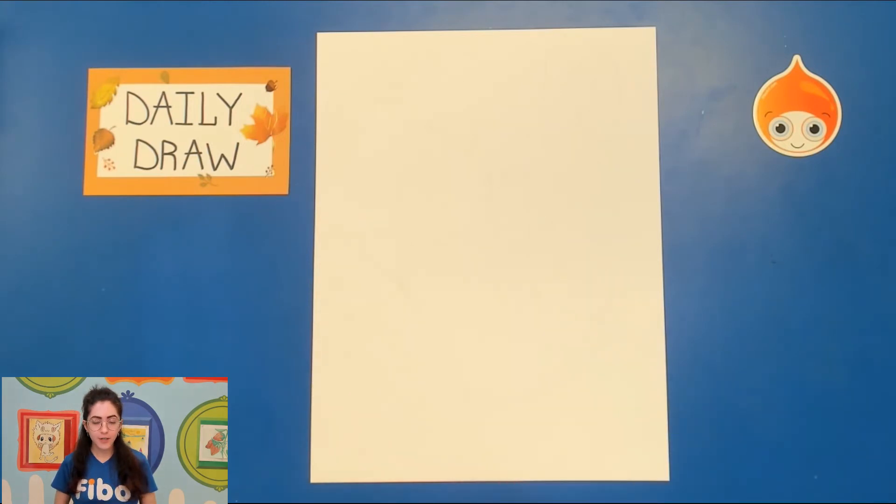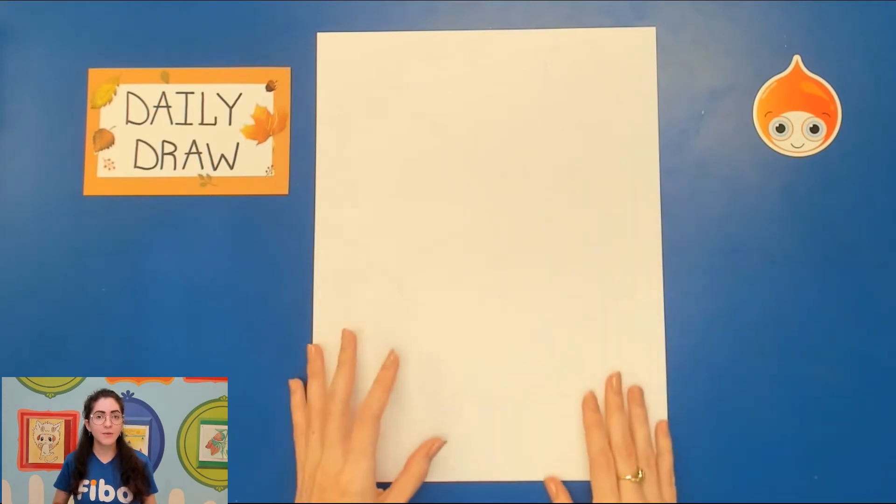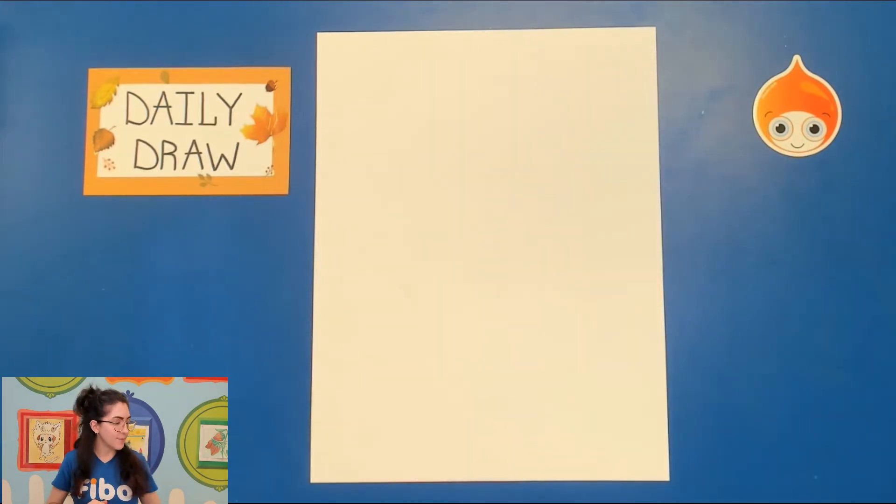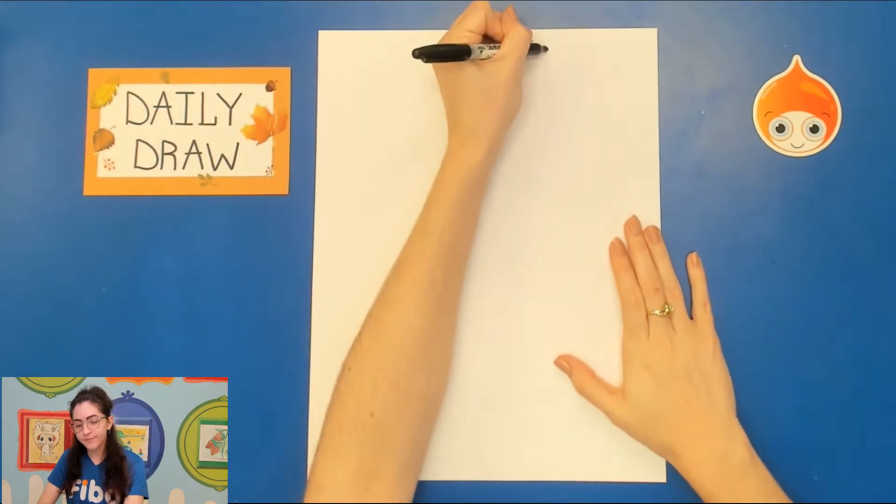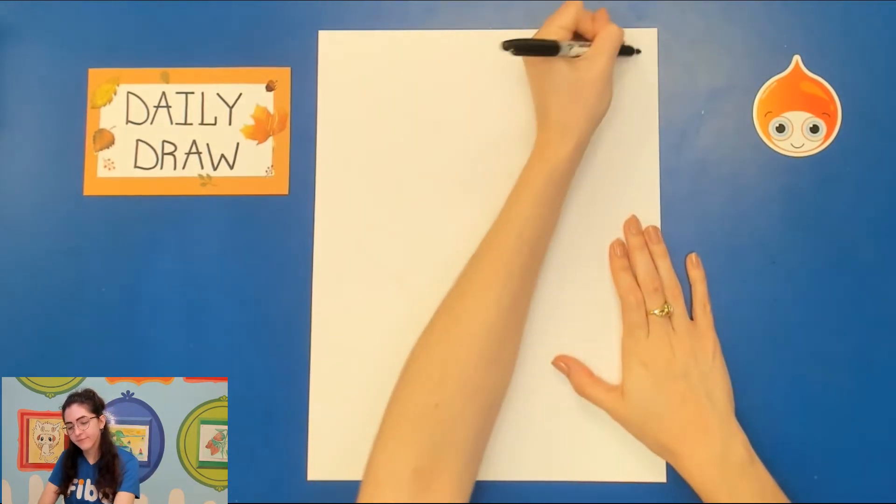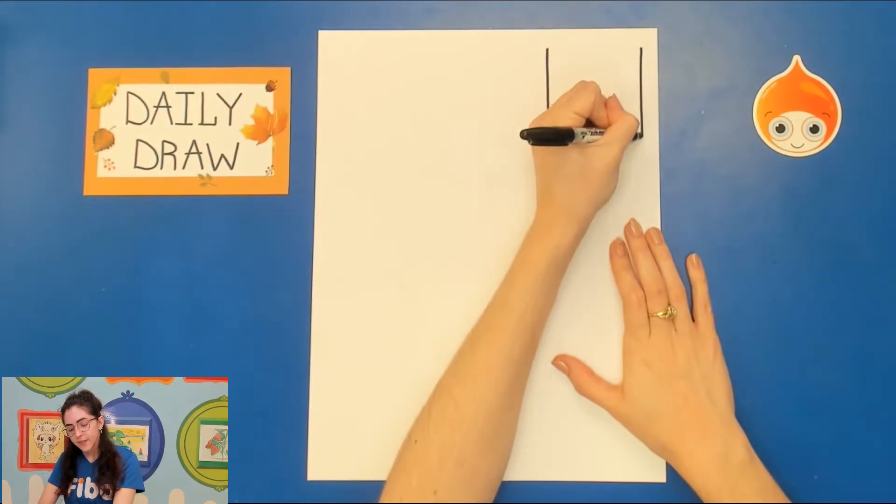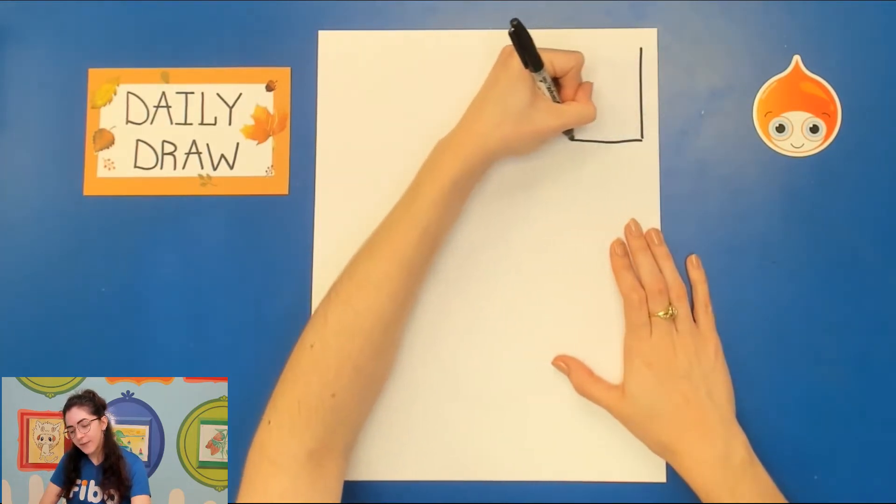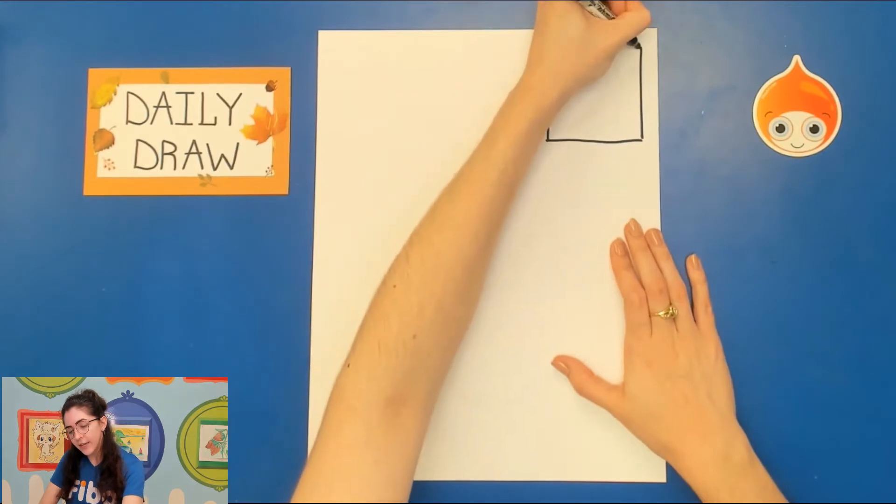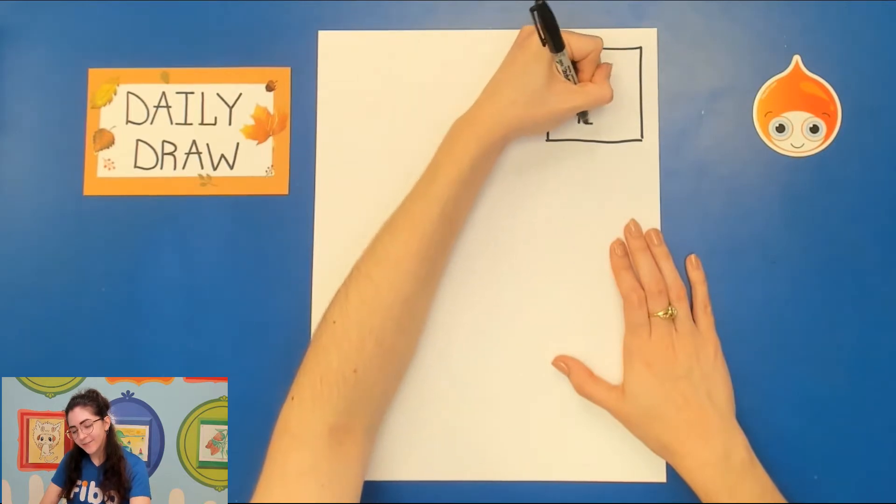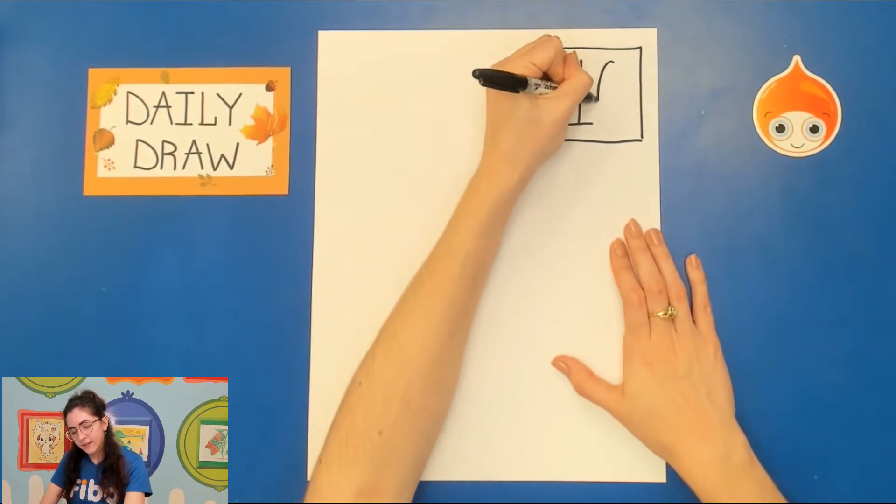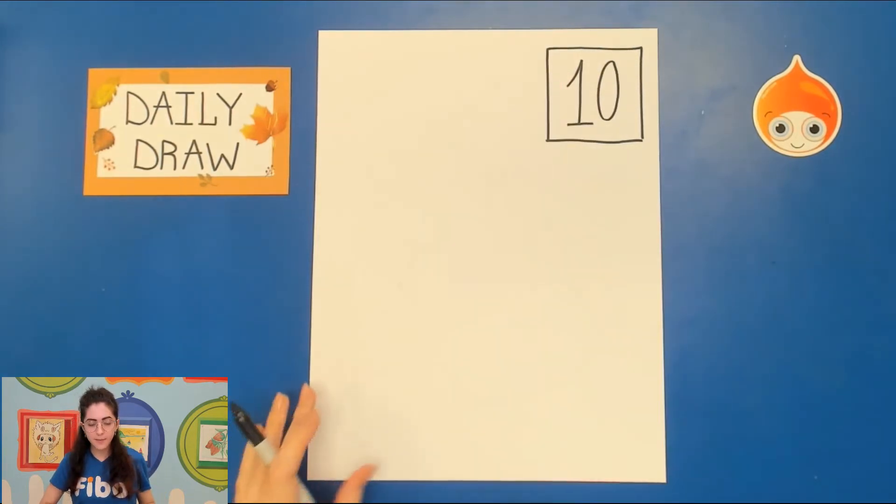Make sure that whatever paper you're using that you turn it vertical up and down and we are going to draw first our number at the top so this is day number 10. I'm going to be using a sharpie to draw. You use a pencil just so you can erase anything that you need to. Okay just a nice box at the top. Again if you want to make this fancy, if you want to do some really pretty calligraphy for the number please feel free.